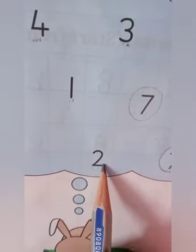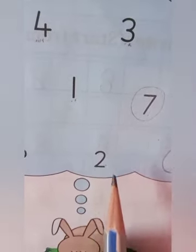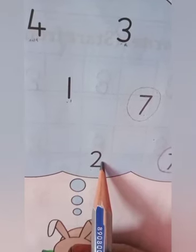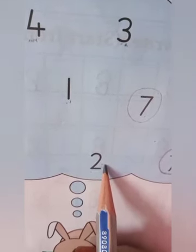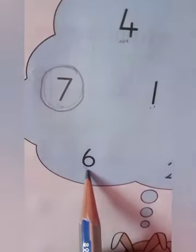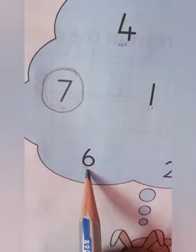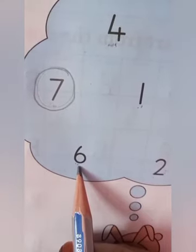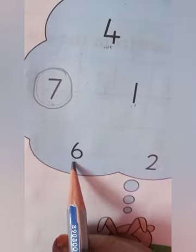Now which number is this? Again seven! So we will circle the number seven. Now which number is this? Two. Will we circle two? No, we will not circle the number two. Now which number is this? Six. We will not circle the number six.